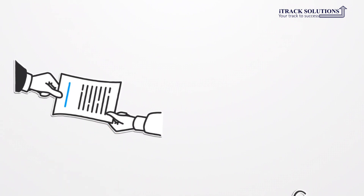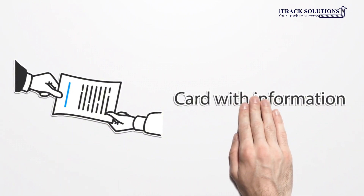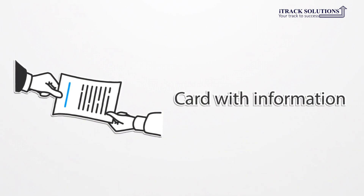In many cases a production Kanban can be simply a card with information. A very easy to understand real life example is the job card that gets generated in a service center for maintenance or repair of an automobile.